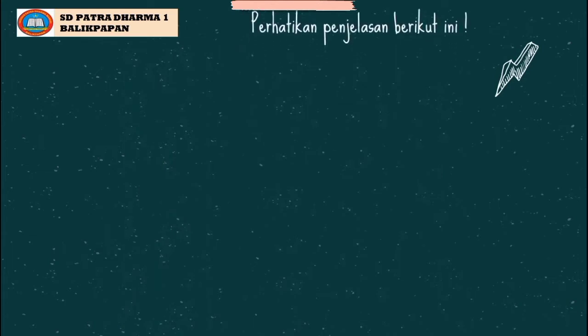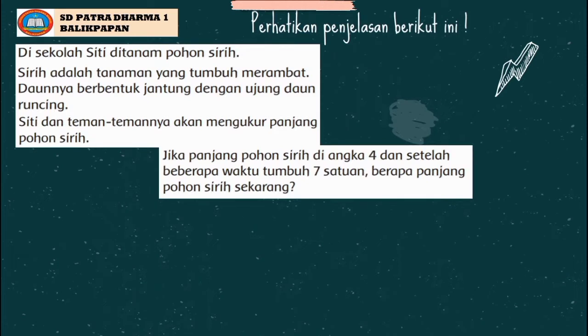Selanjutnya, perhatikan penjelasan berikut ini. Di sekolah Siti ditanam pohon sirih. Sirih adalah tanaman yang tumbuh merambat, daunnya berbentuk jantung dengan ujung daun runcing. Siti dan teman-temannya akan mengukur panjang pohon sirih. Jika panjang pohon sirih di angka 4 dan setelah beberapa waktu tumbuh 7 satuan, berapa panjang pohon sirih sekarang? Kita akan menghitungnya menggunakan garis bilangan.